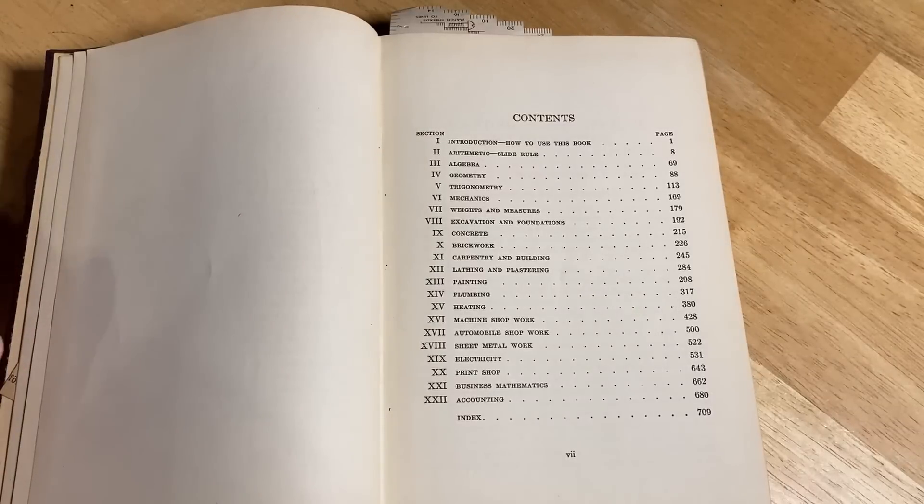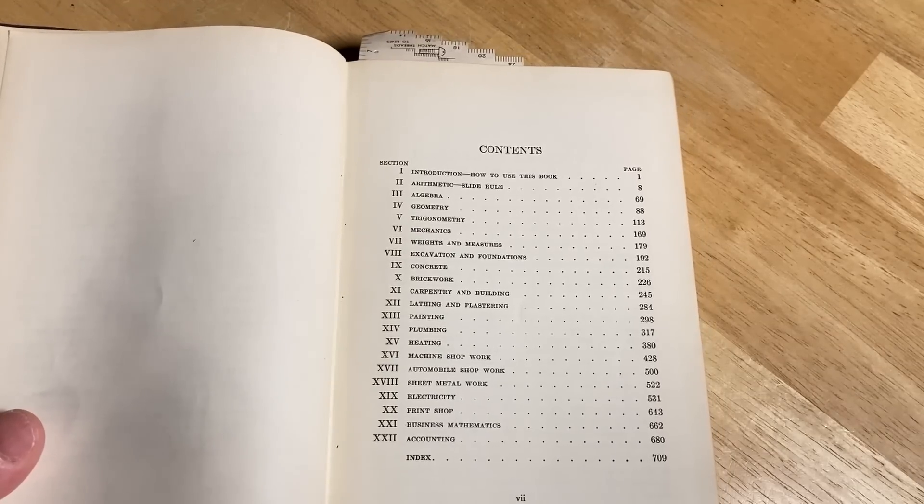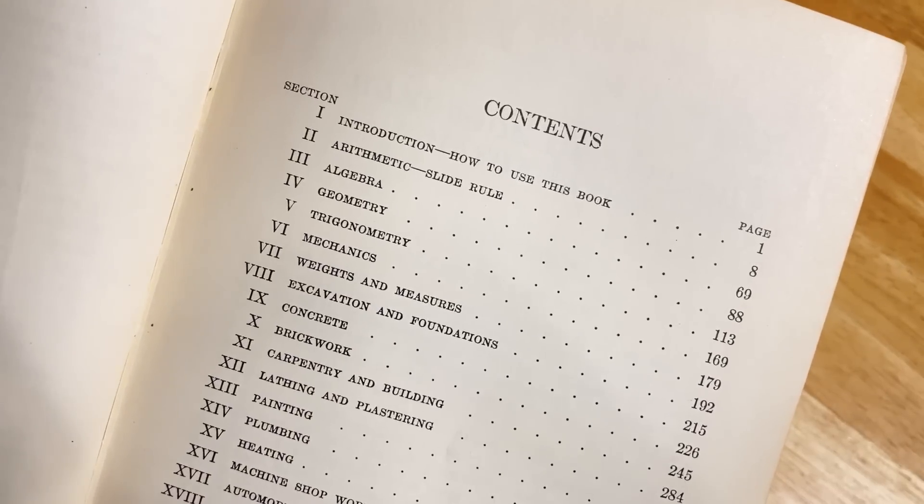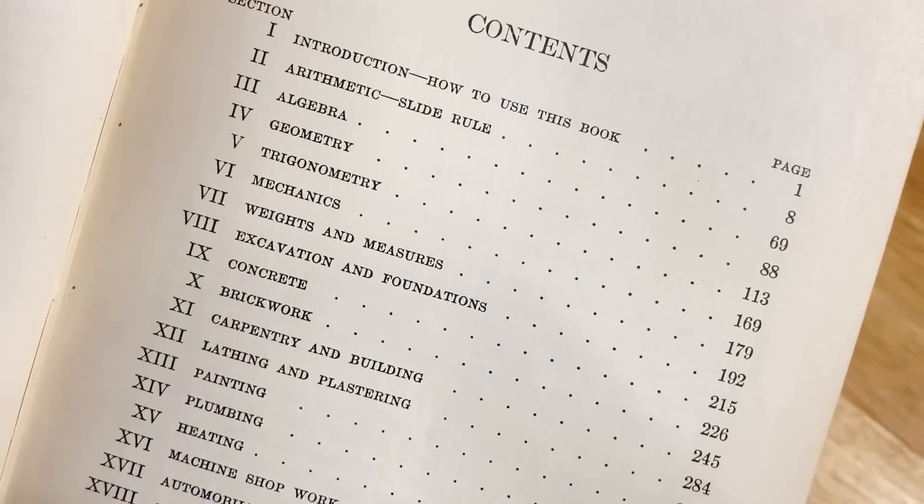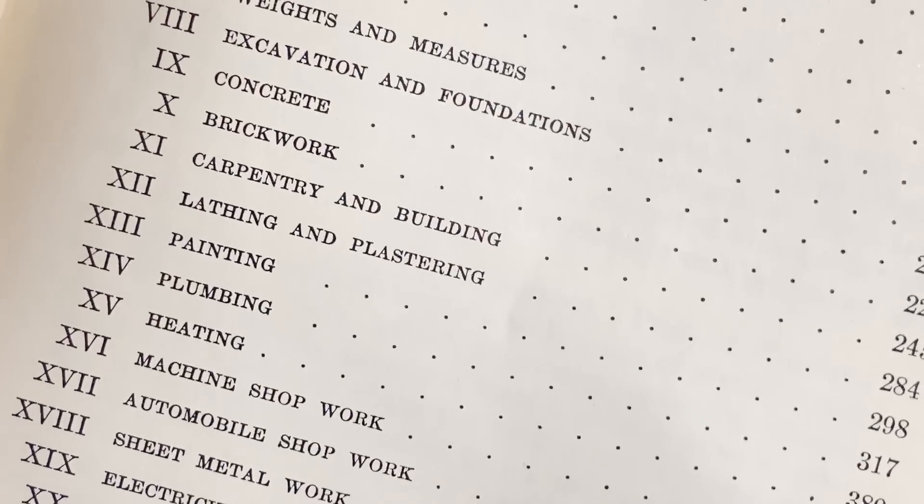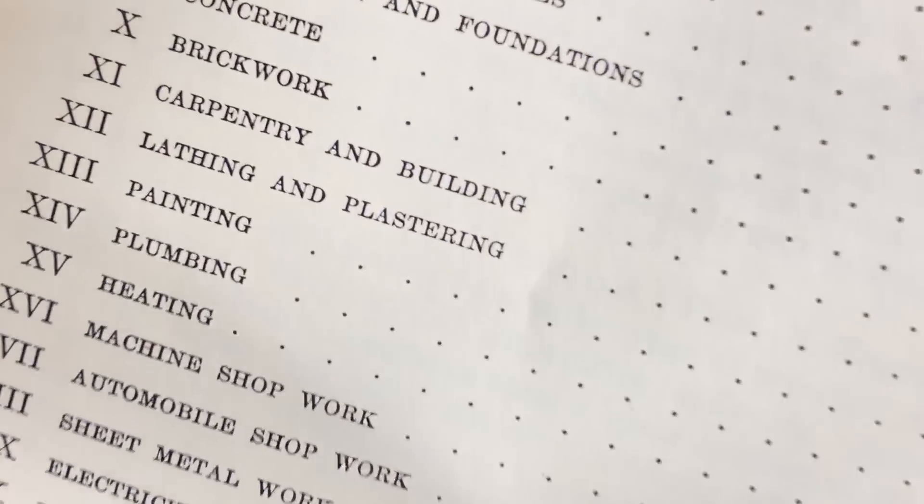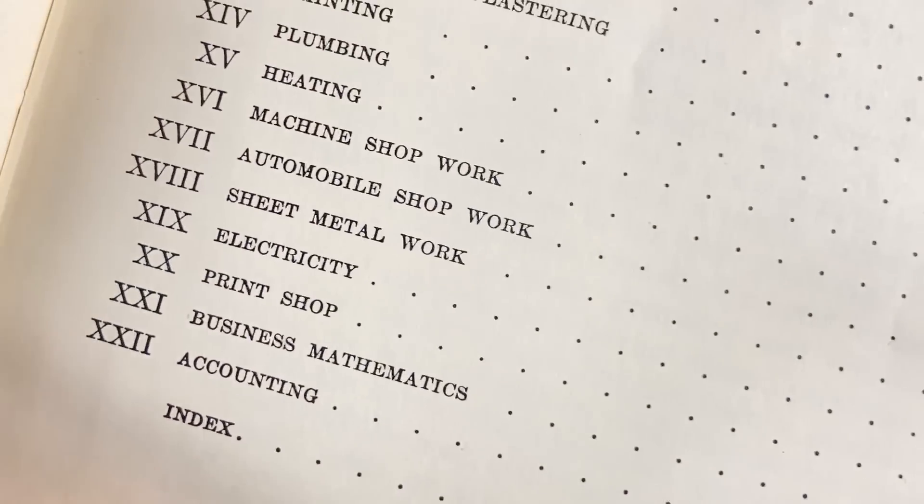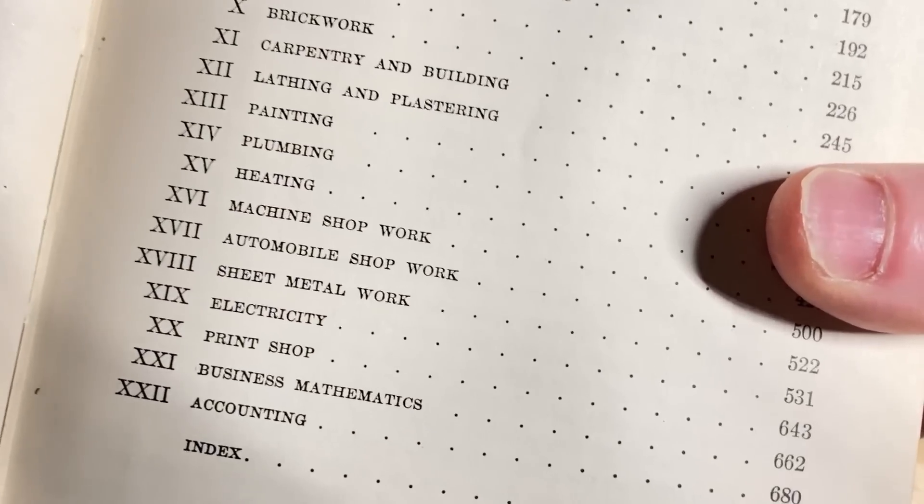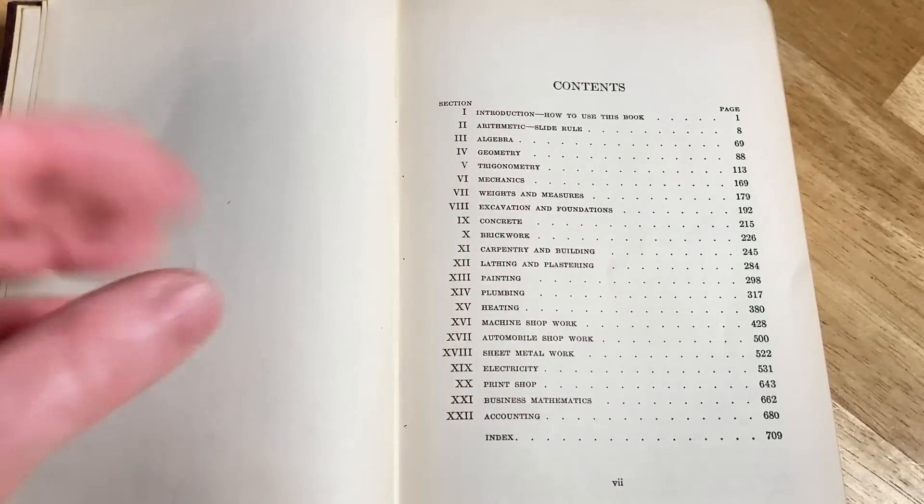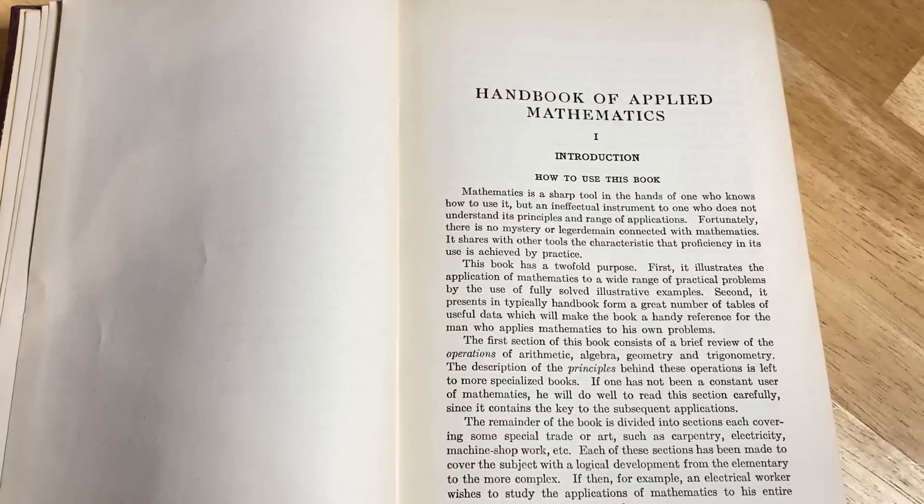So here's a look at the contents. Again, this book has math that you've never seen. It's stuff that you just don't see in books today. So here we go. You can get a look here at what's in here. Introduction. How to use this book. Arithmetic. Slide rule. Algebra. Geometry. Trigonometry. Mechanics. Weights and measures. Excavation and foundations. Concrete. Brickwork. Carpentry and building. Lapping and plastering. Painting. Plumbing. Heating. Machine shop work. A lot of things that I feel like, I don't see these things in math books today, right? These are not things that are taught. I'm sure there is a reason. If you know why or if you have theories, leave a comment. You know, things change over time. I think a lot of the applications today in mathematics are centered towards computers and programming. You know, with the internet, things are different.